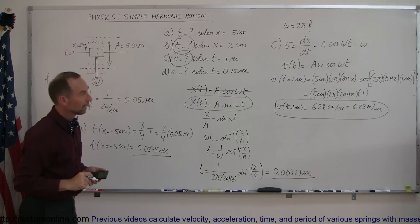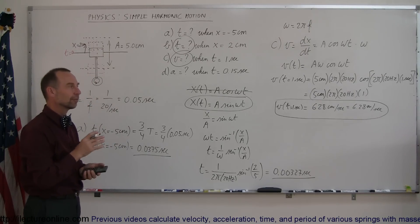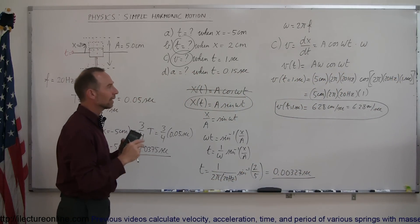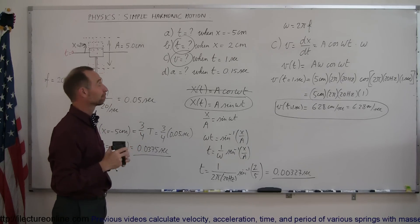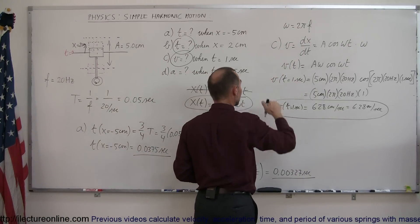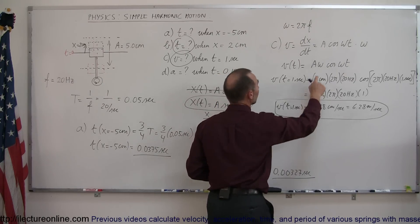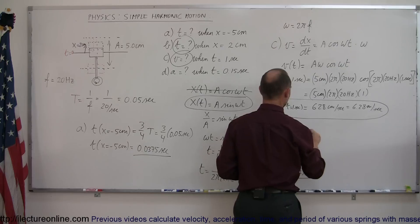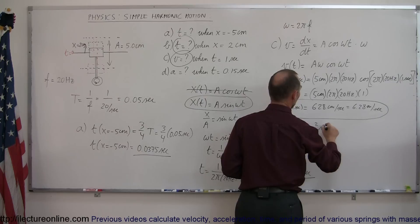Finally, we find the acceleration when time equals 0.15 seconds. For part D, we take the derivative of the velocity equation. The derivative of cosine is negative sine, and the derivative of the angle gives another omega factor, so acceleration equals negative A times omega squared times sine of omega-t. This gives us the acceleration as a function of time.